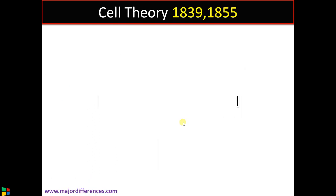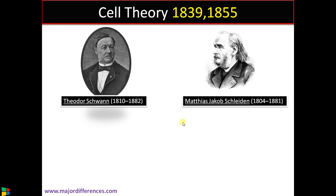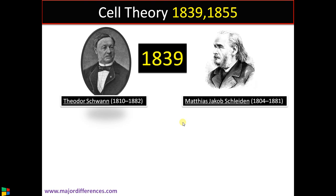Cell theory was actually proposed by two scientists, German scientists Theodor Schwann and Matthias Schleiden. In 1839, Theodor Schwann was basically a German pathologist and he studied animal tissues and found out that all animal tissues observed under his microscope are made up of cells, and he came up with the conclusion that animals are made up of cells.